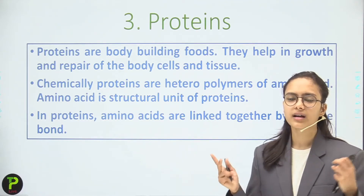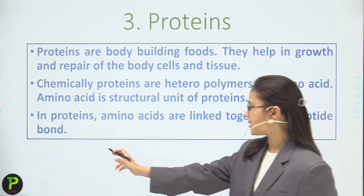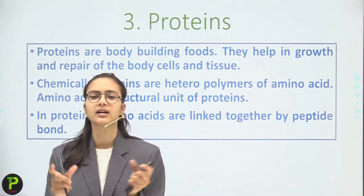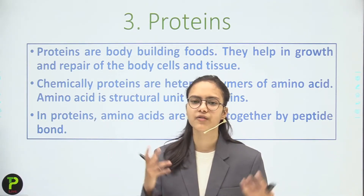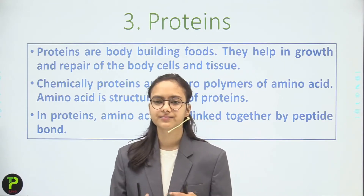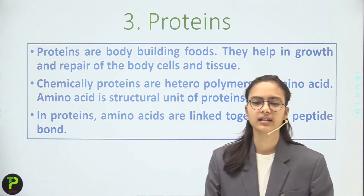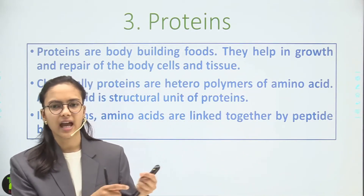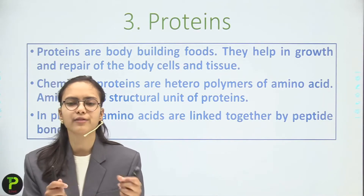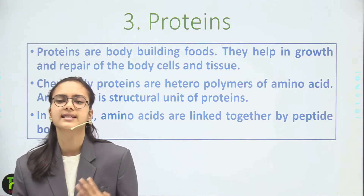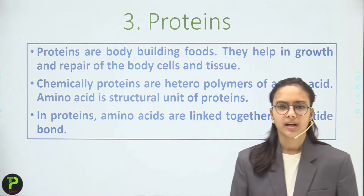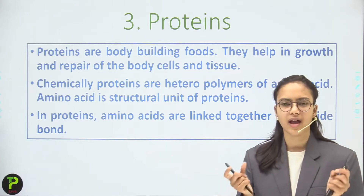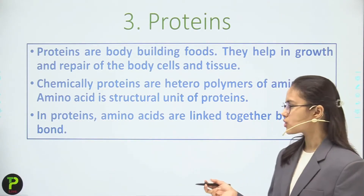In proteins, amino acids are linked together by peptide bonds — just as objects in a chain are attached by some connecting material, amino acids are attached to each other by peptide bonds (peptide linkages), forming the protein structure.